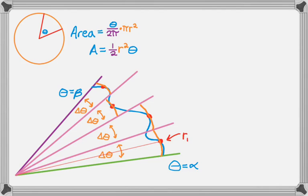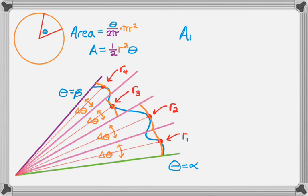So I need some radii, so I would find the radius there, and then there, and then there, and there. And what I'd end up doing, to approximate it, is I'd write a summation. So it's approximately the sum, in my case, from 1 to 4 of 1 half, and then r sub i squared, and then delta theta.